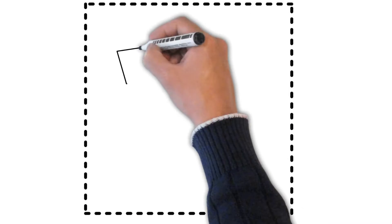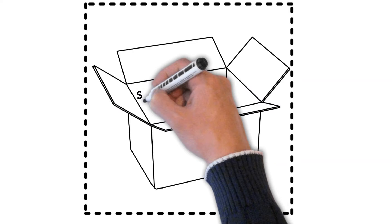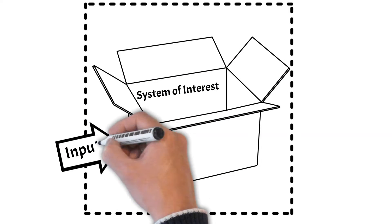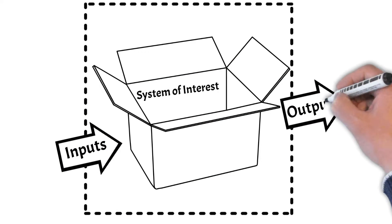MBSE is the science and art of using models to express architecture and design relationships of the system of interest. Model-based systems engineers capture the linkages internally and externally to the system of interest.